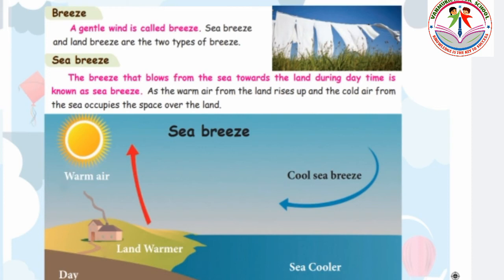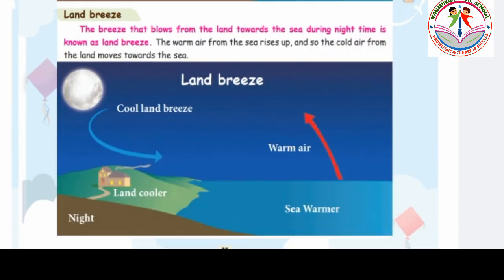The warm air from the land rises up and the cold air from the sea occupies the space over the land. Next, land breeze — that means the breeze that blows from the land towards the sea during night time is called land breeze. The cold land breeze moves towards the sea — that is called land breeze.